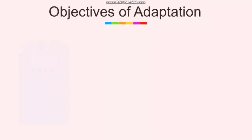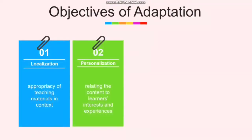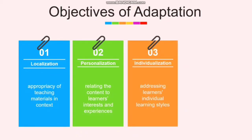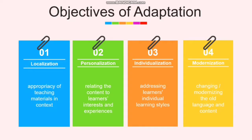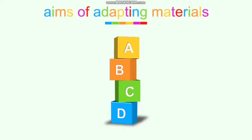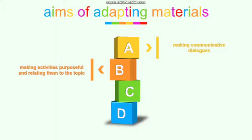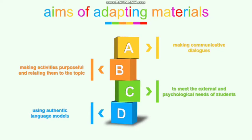What are our objectives? Localization, personalization, individualization, and modernization. We need to ensure teaching materials are appropriate in context. Materials need to relate content to learners' interests and experiences. By adapting, we address learners' individual learning styles and get rid of old language and content. Our aims include making communicative dialogues, making activities purposeful, meeting external and psychological needs of students, and using authentic language models.